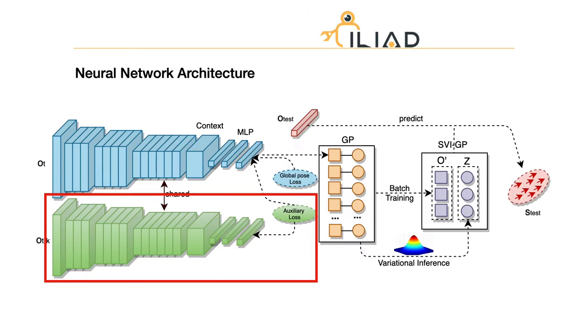Now, let's take a closer look at the network architecture. An auxiliary loss is used to learn the spatial consistent features for global pose regression.